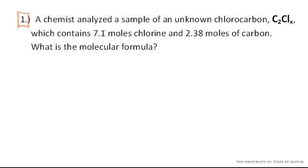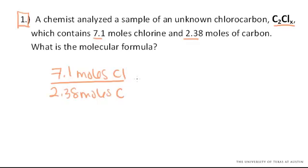A chemist analyzed a sample of an unknown chlorocarbon, C2ClX, and it was found to contain 7.1 moles of chlorine and 2.38 moles of carbon. Well, we can just go ahead and set up our ratio, 7.1 moles of chlorine for 2.38 moles of carbon. That has to be the ratio, that ratio has to be followed in the chemical formula.